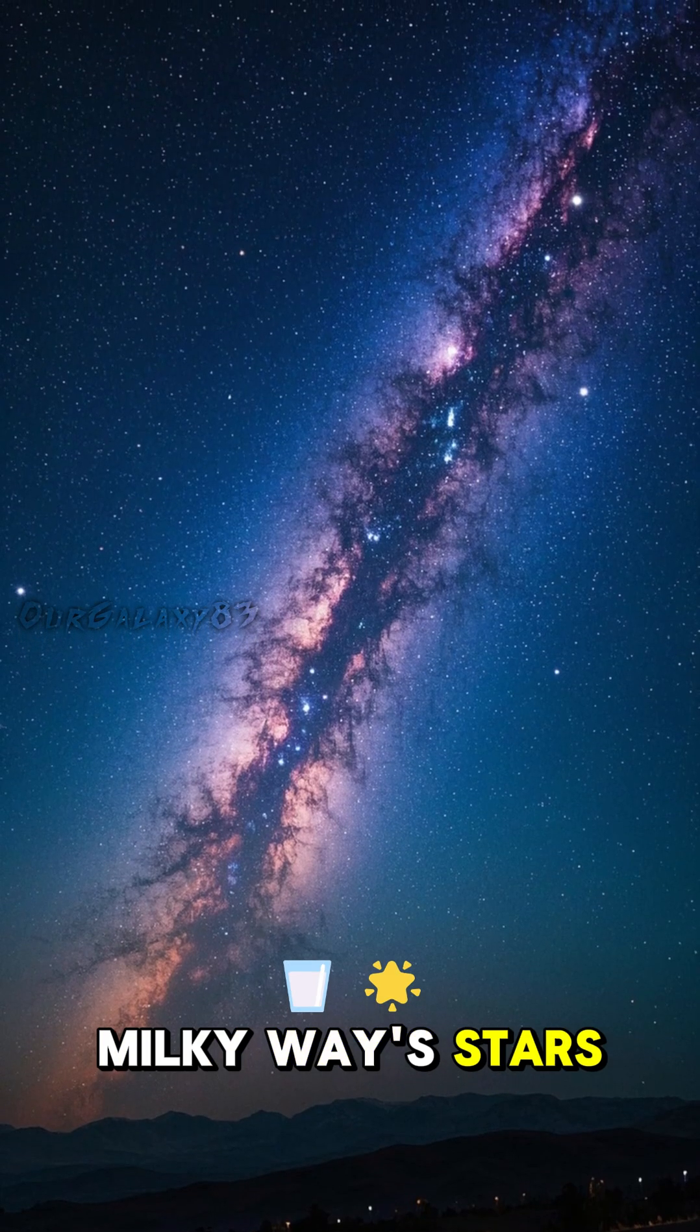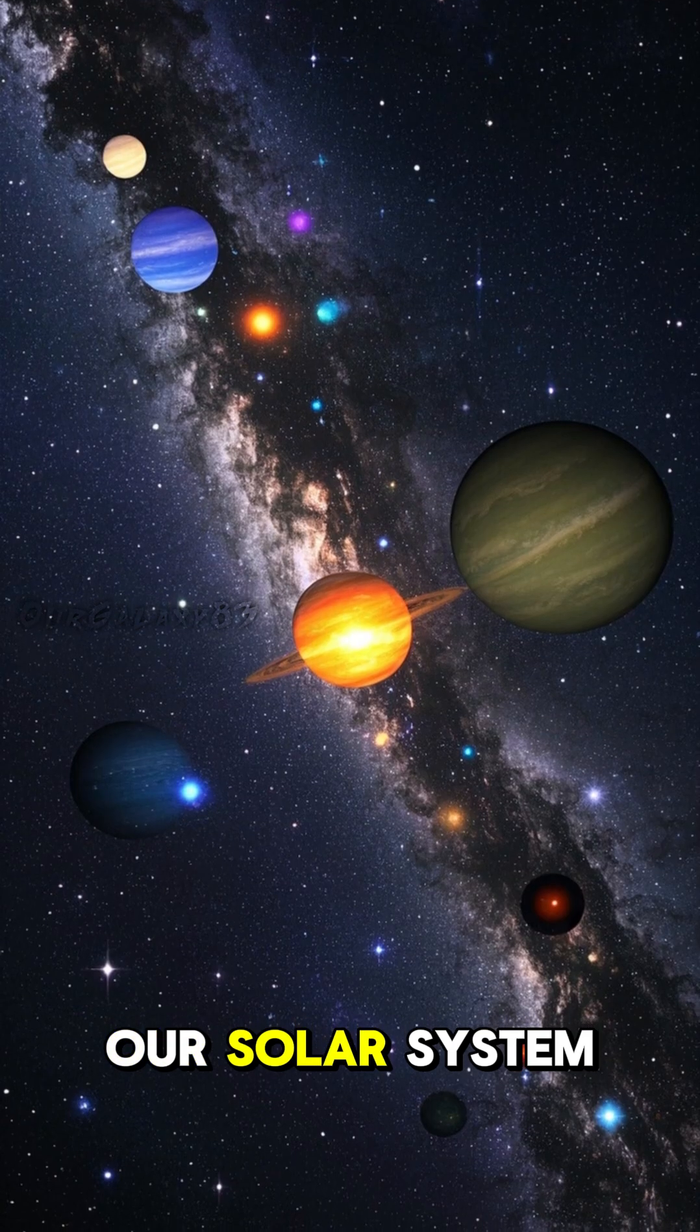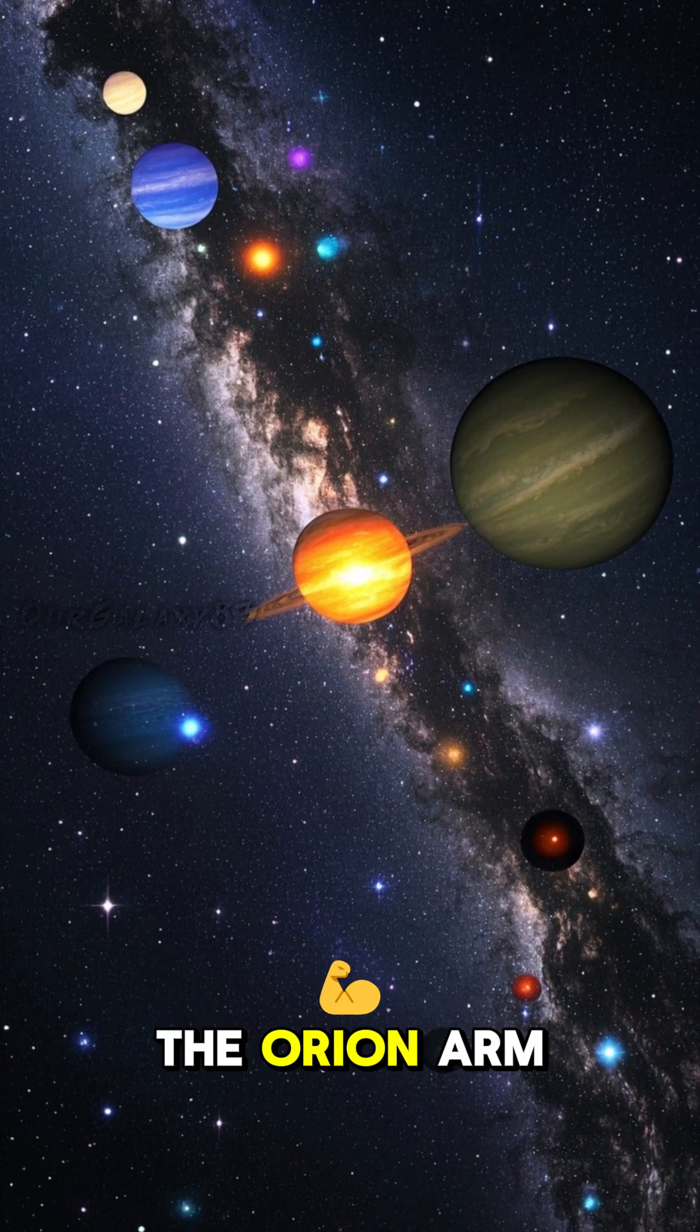Most of the Milky Way's stars are in the disk, which is only about 100 light years thick. Our solar system is in the middle of one of these spiral arms, and it's called the Orion arm.